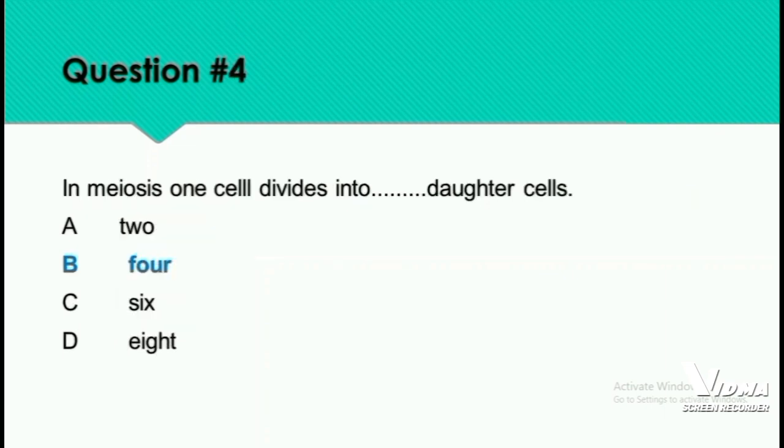Question 4: In Meiosis 1, a cell divides into how many daughter cells? In Meiosis 1, a cell divides into two daughter cells.